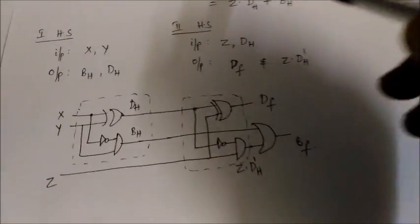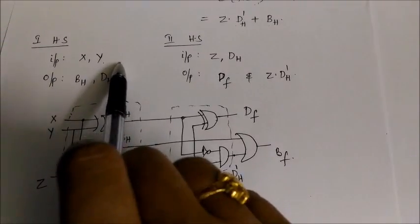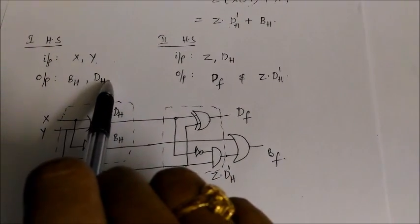Now when we consider two half subtractors, the first half subtractor input will be x and y. In that case, the output will become bh and dh. This is a normal half subtractor.